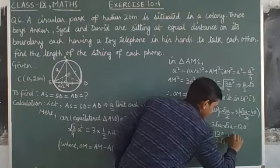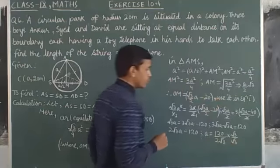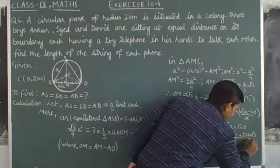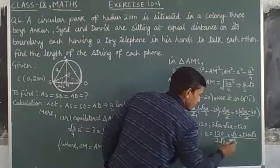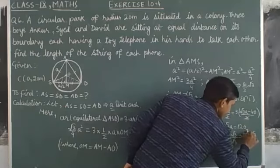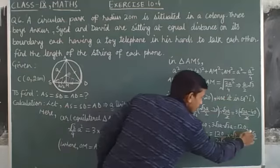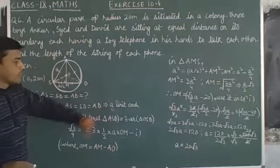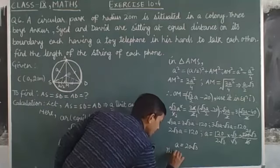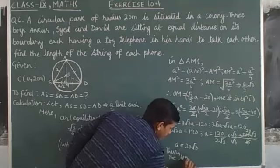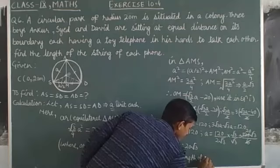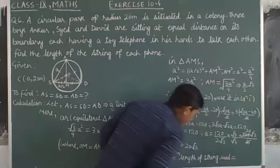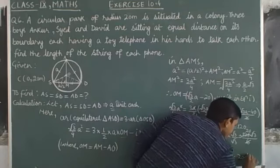Let's rationalize the denominator, for which both numerator and denominator are multiplied by root 3. So it is 120 root 3 upon 3, which is 20 root 3. And yes, that 'a' we have to calculate here. So finally, we could conclude that the length of the string used equals 20 root 3 meters.